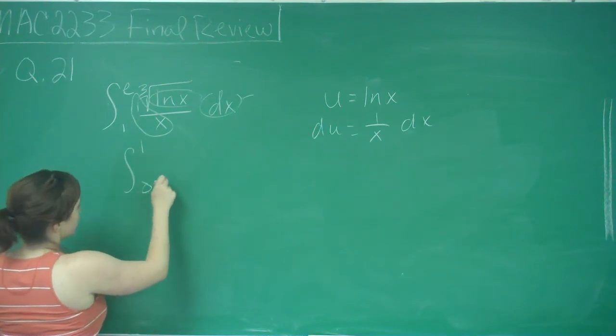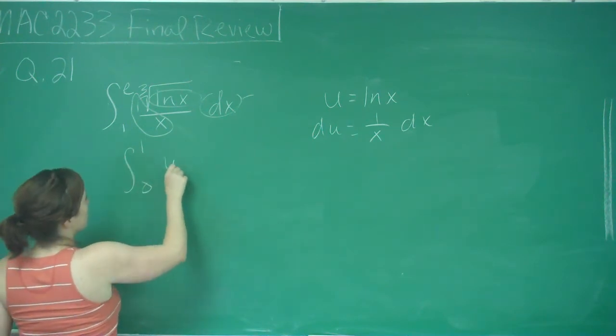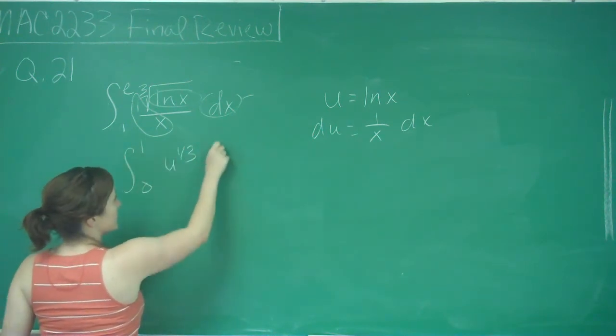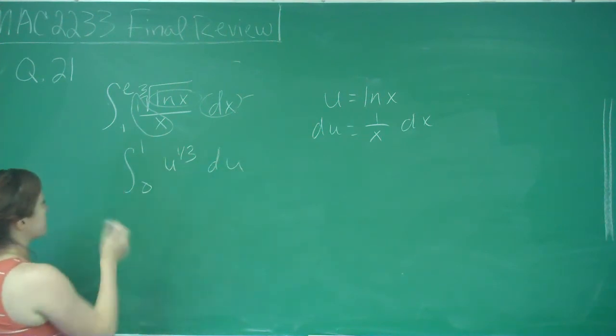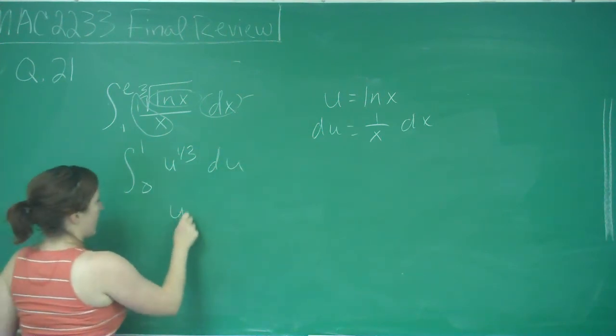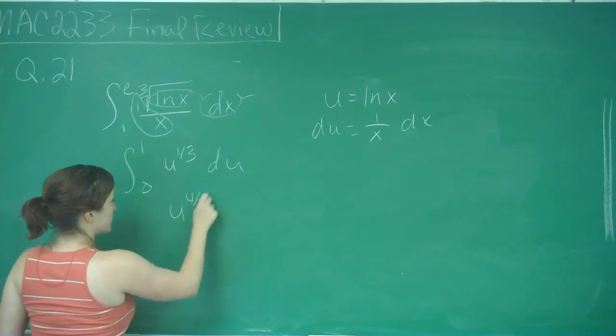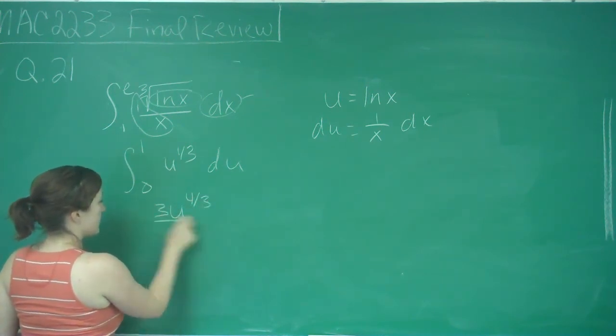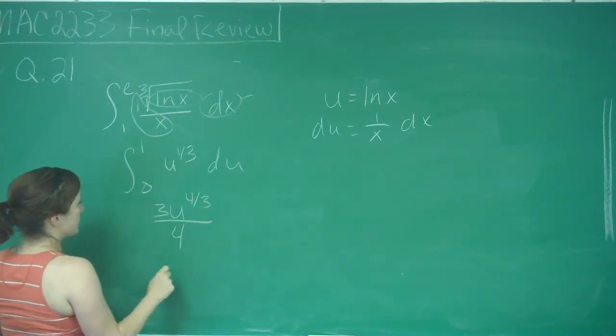So now my new function is the integral from 0 to 1 of u to the 1/3 du. And so I can just add 1, which gives me 4/3, and divide by that number, so it's the same thing as multiplying by the reciprocal, 3/4, from 0 to 1.